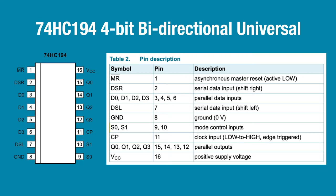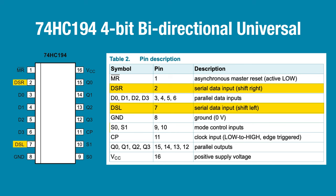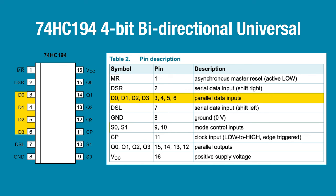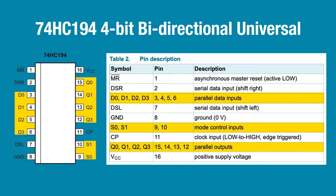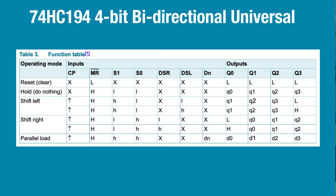Shift registers also often have other enable pins. This universal shift register can operate in serial in, parallel out mode using one serial input — either DSR or DSL — or it can operate in parallel in, parallel out mode using the four parallel inputs D0 through 3. In either mode, the four parallel outputs Q0 through 3 are used. Pins S0 and S1 act like enable pins. In most shift registers, bits shift left to right, but universal shift registers have an additional serial input where bits shift right to left.